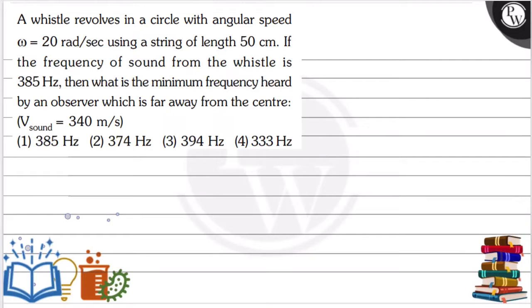Hello, let's see the question. A whistle revolves in a circle with angular speed omega equals 20 radian per second using a string of length 50